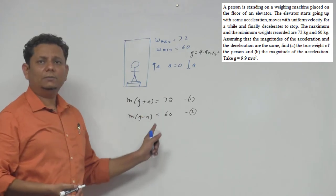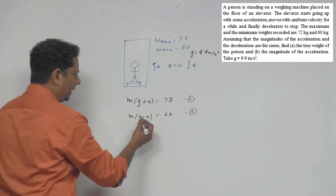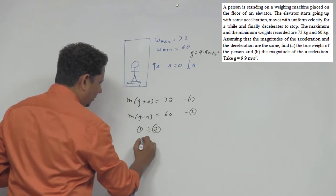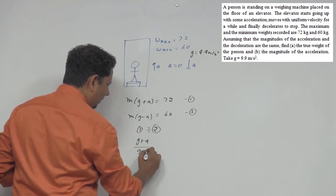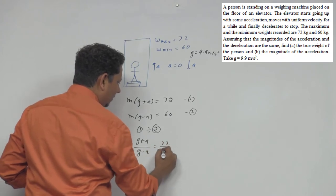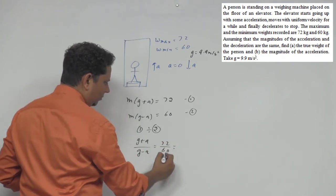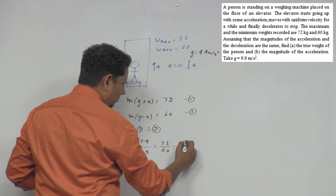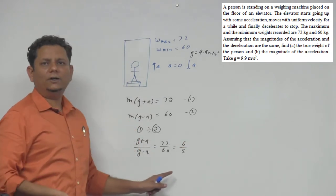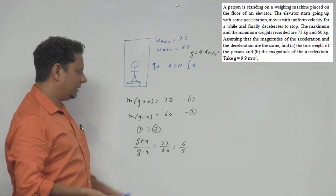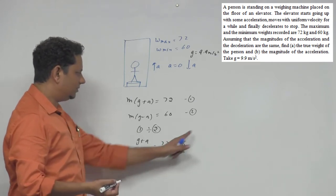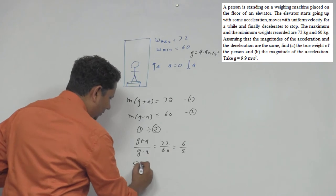If we divide equation 1 by equation 2, the mass m cancels out. So we get (g + a) / (g − a) = 72 / 60. Simplifying by dividing by 12, this gives us 6/5. If you know the componendo-dividendo rule, fewer steps are needed, but let's proceed by cross-multiplying: multiplying both sides gives us the expanded form.